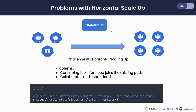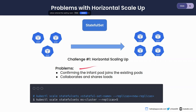What is the problem with horizontal scaling? Say we have a three-pod database and we want to scale it up to four pods using the kubectl scale command with the desired replicas. When performing scale up, there are a few problems: there is no way to ensure the newly joined pod connects to the others in terms of collaboration, load sharing, and data sharing. There is also no way to make sure the whole cluster is healthy once the pod joins.